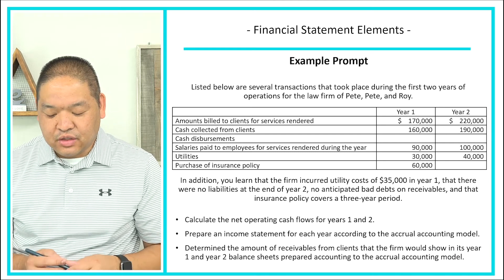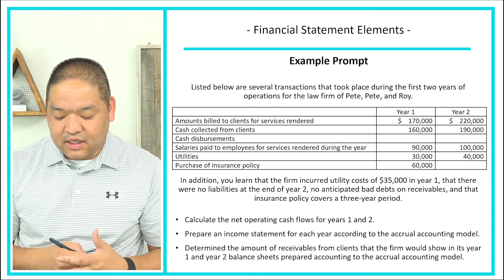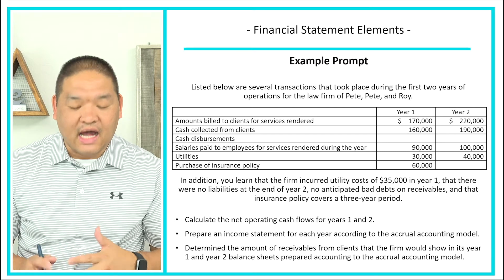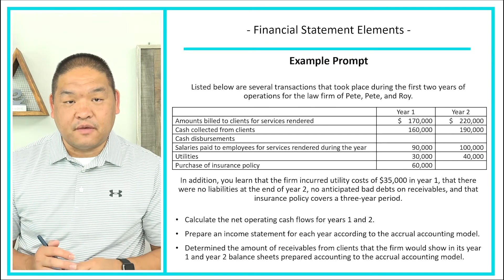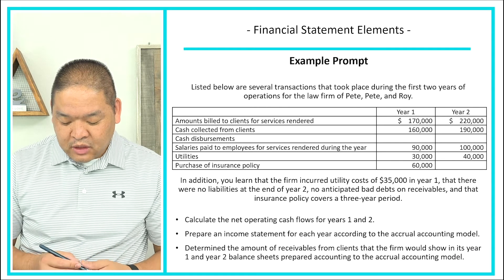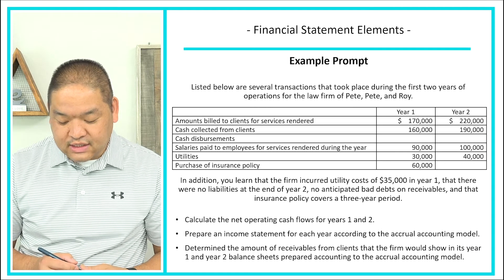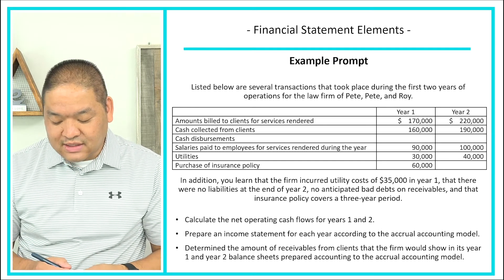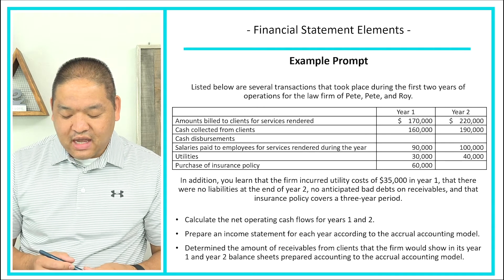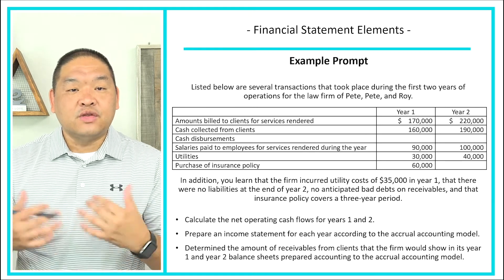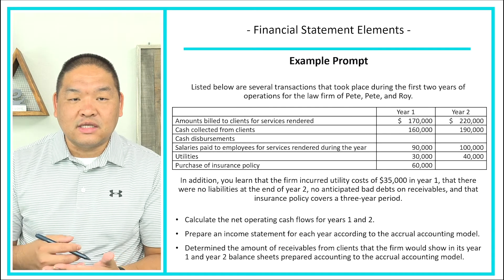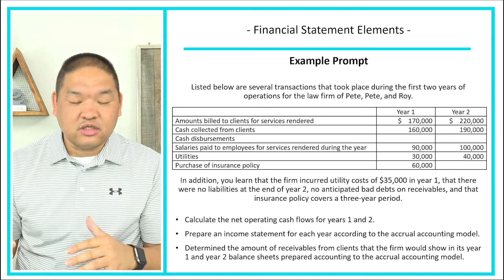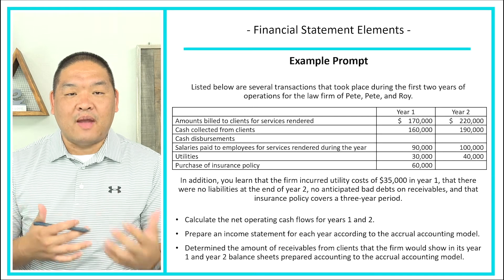It says: listed below are several transactions that took place during the first two years of operations for the law firm of Pete, Pete, and Roy. We've got amounts billed, cash collected, salaries, and utilities. The additional information tells us the firm incurred utility costs of $35,000 in year one, there were no liabilities at the end of year two, no anticipated bad debt on receivables, and an insurance policy covers a three-year period.